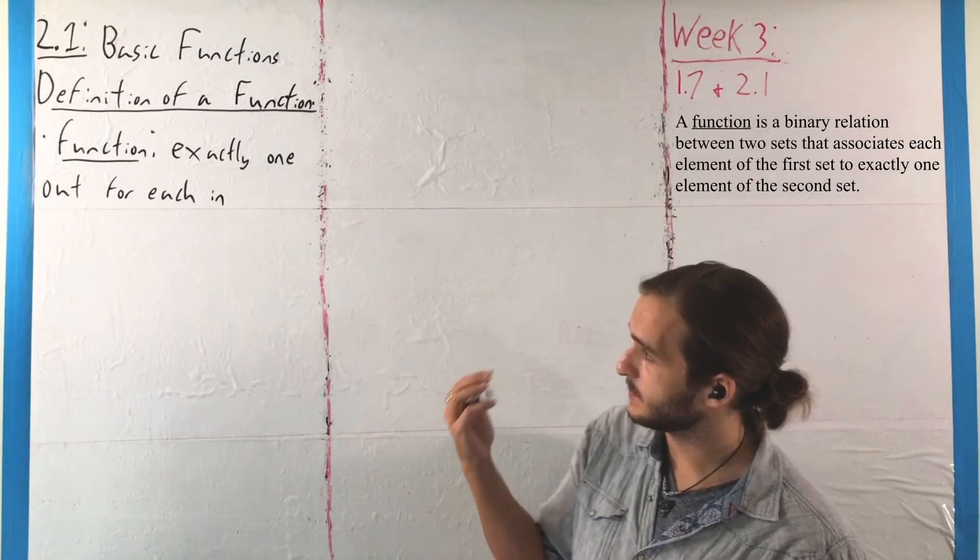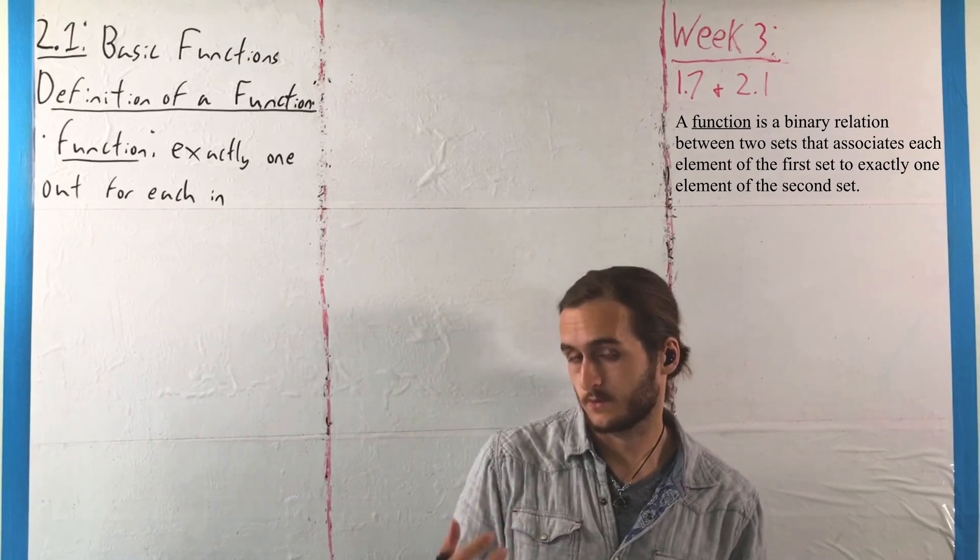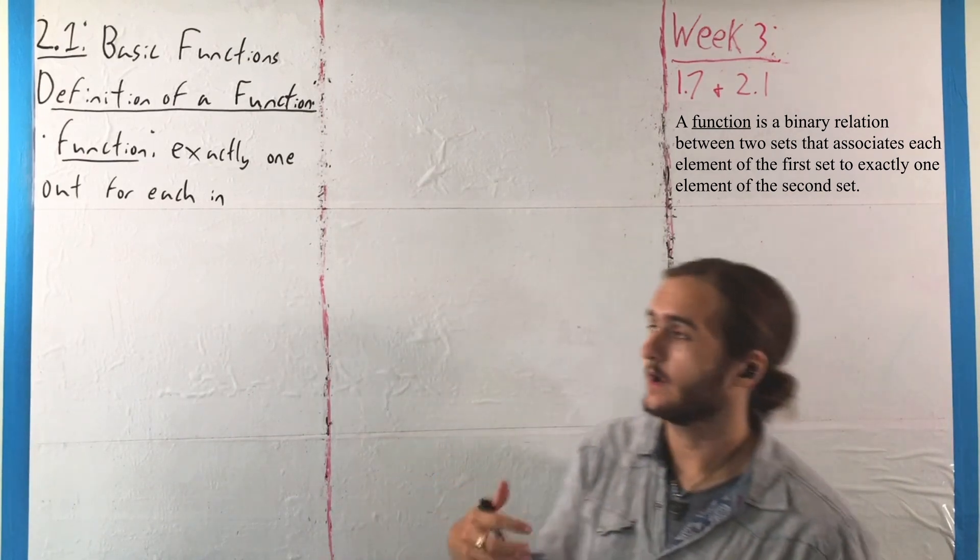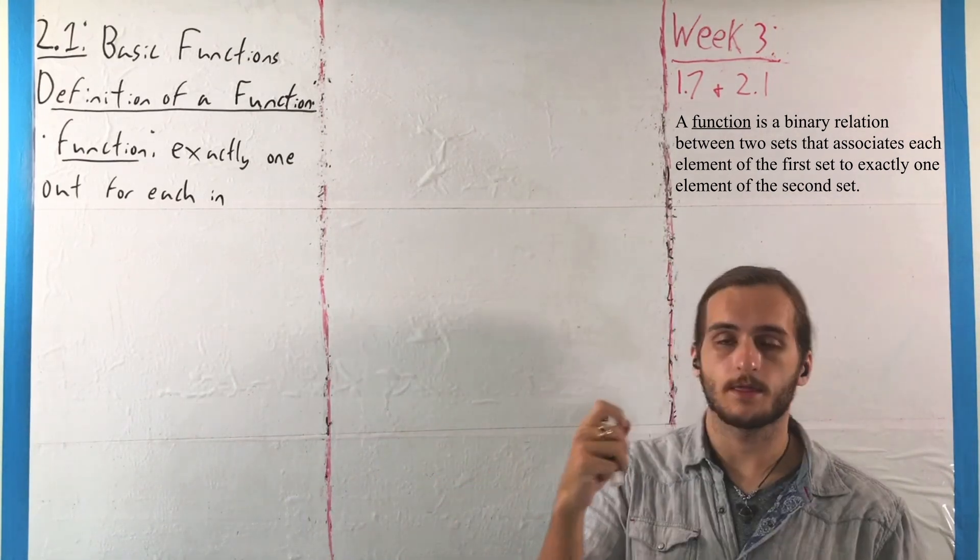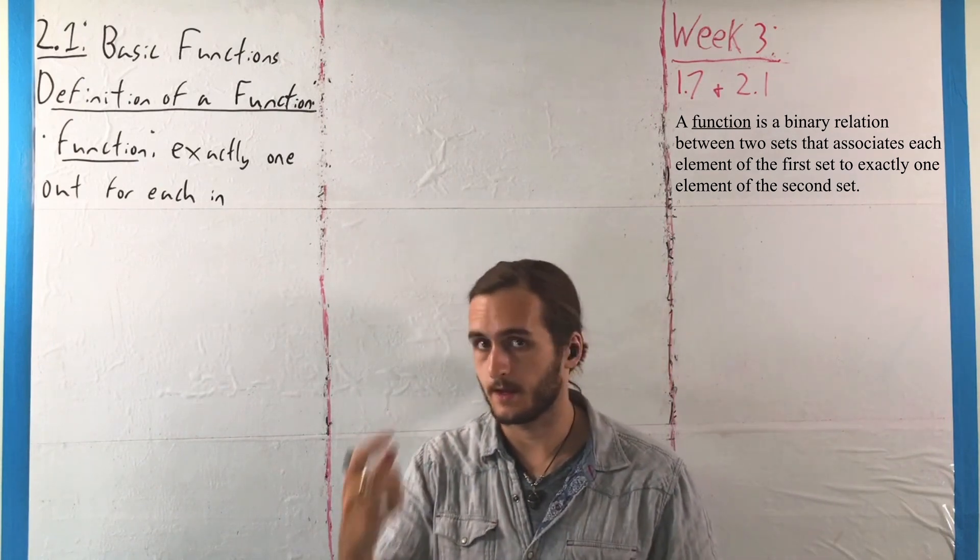As I said, a function, meanwhile, is a specific kind of relation. It's a relation where every time we put in one thing, we only get exactly one thing out.